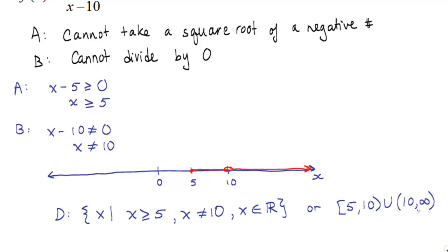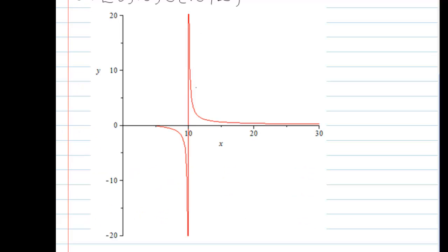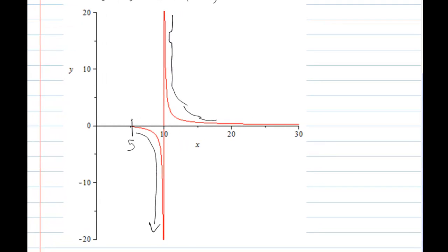After plotting this in Maple, we can see that this function doesn't exist until it reaches 5. And then, it goes down to a vertical asymptote at 10, and then it's going to continue on to infinity.